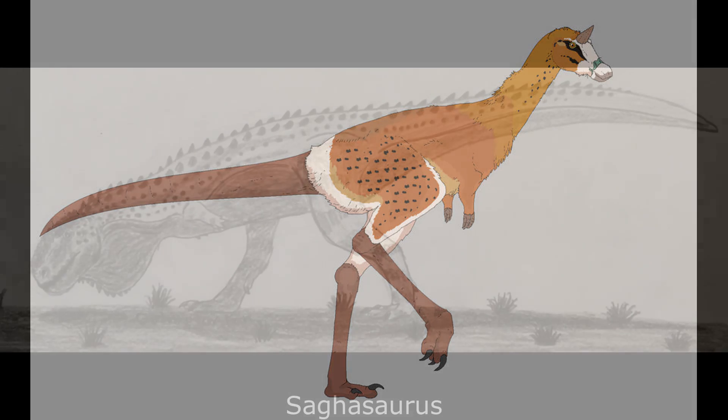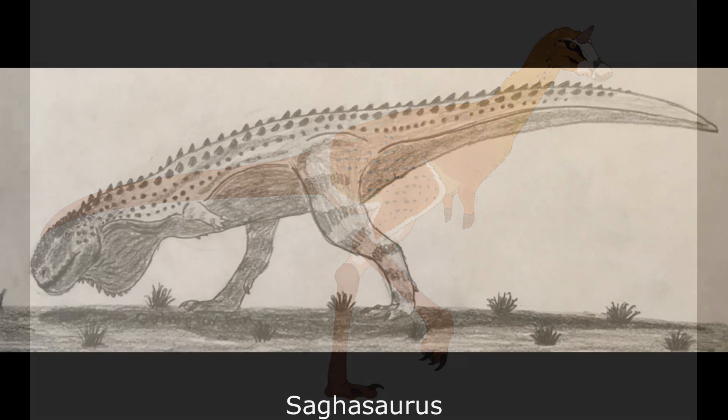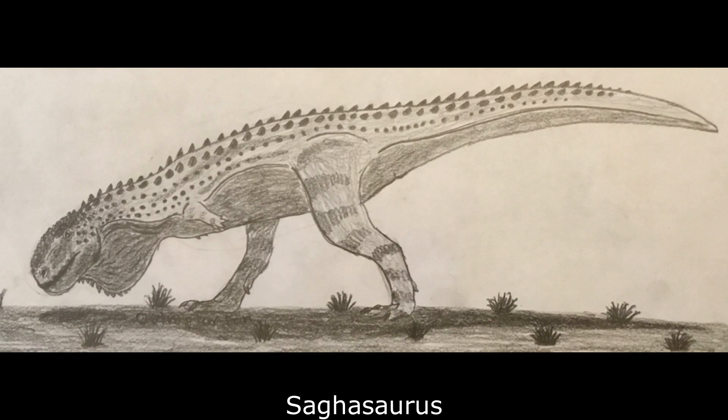Preying on these herbivores was the large abelisaur Sargosaurus, a 9-metre apex predator and close relative of the even more massive late Eocene genus Teratatorus. Abelisaurs such as this were the largest carnivores in Paleogene Africa, hunting sauropods and the larger hadrosauroids.